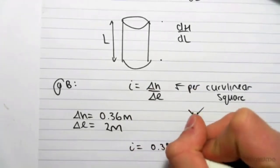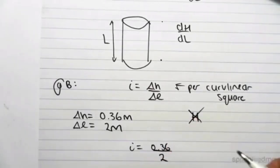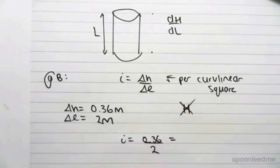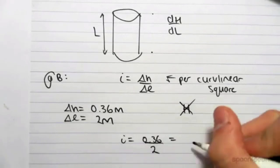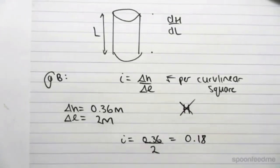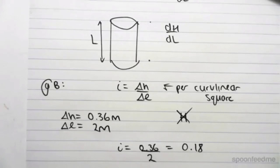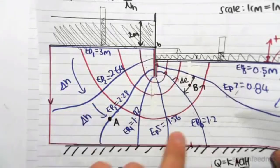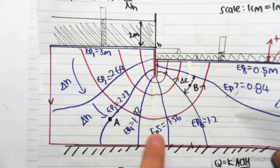Which means we can find our hydraulic gradient, which is the change in h, so 0.36, over the change in L, which is 2 meters, which if we work this out, we get 0.18. That's all you do for hydraulic gradient. Just keeping in mind that for a flow net, the hydraulic gradient will change depending on where you are looking in your flow net.